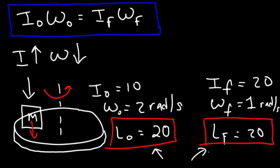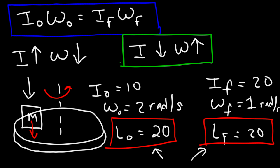The reverse is also true: if we decrease inertia, then omega increases. This is illustrated by a figure skater. When a skater spins with arms stretched out and then brings their arms toward their center, they're decreasing their inertia. As a result, their angular velocity increases and they spin faster — all due to the conservation of angular momentum.